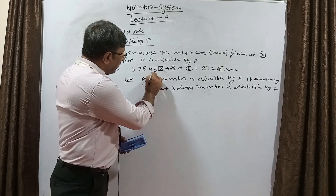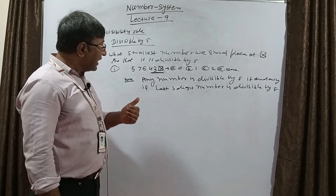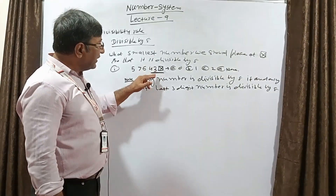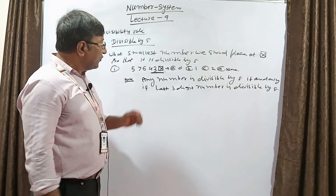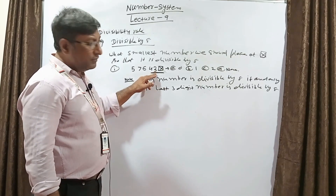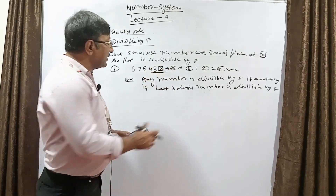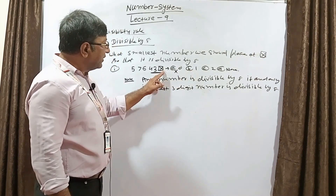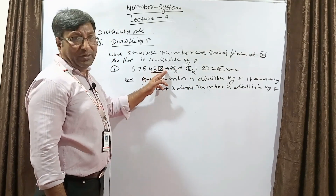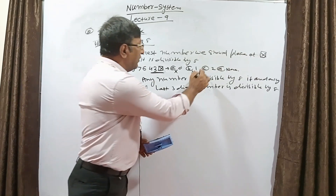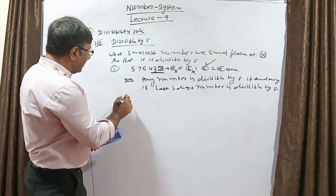So in this question, our focus is only on the last three digits. We check what number placed at the star makes those three digits divisible by 8: 8×5=40, remainder 3; bring down 30 — not divisible by 8; try 1 → 31, not divisible by 8; try 2 → 32, and 8×4=32. So our correct answer is 2.